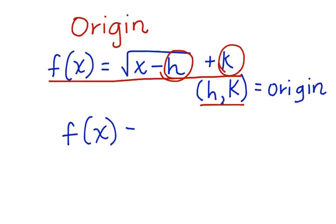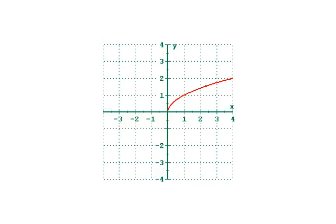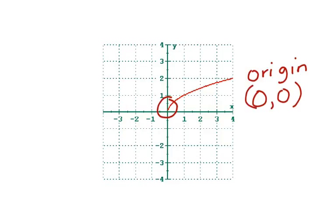Let's look at the parent function once again: f(x) = √(x). In this case, there is no h term and there is no k — we could put zeros in there. So the origin is at (0, 0). Looking at the graph again, you can see this is true: the origin of this graph is right here, at (0, 0), just like we could determine from the equation.